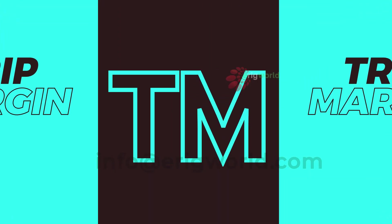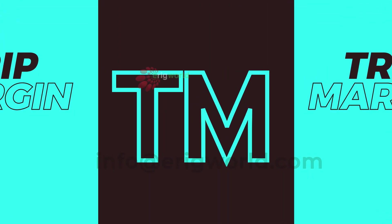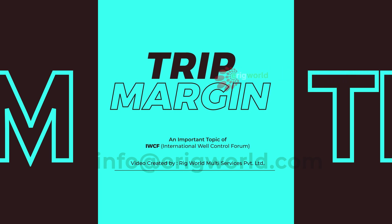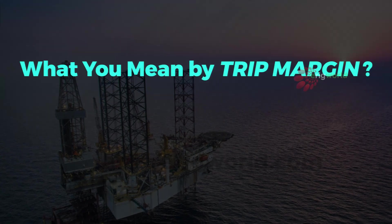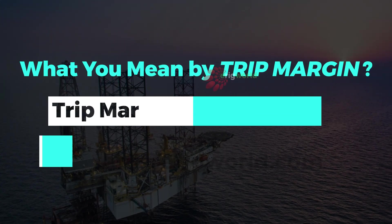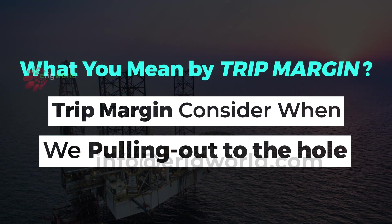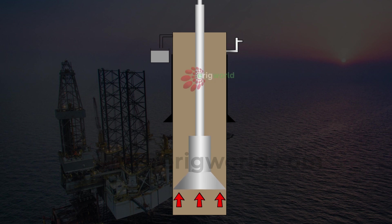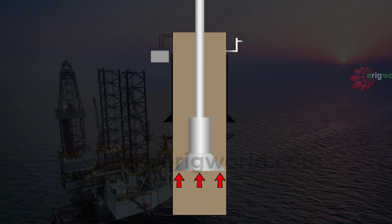Trip margin. This is a new topic included in our course. Trip margin should only be considered when we are pulling out of the hole. During pullout, because of the upward movement of the string, there is a drop in pressure at the bottom, and this drop in pressure is called swab pressure.